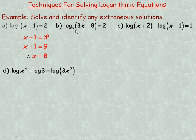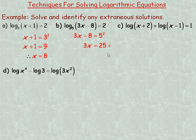For example b we do the same thing, rewriting in equivalent exponential form: 5 squared equals 3x minus 8, or 3x minus 8 equals 5 squared. 5 squared is 25. Adding 8 to both sides gives 25 plus 8 equals 33, and dividing by 3 gives x equals 11.